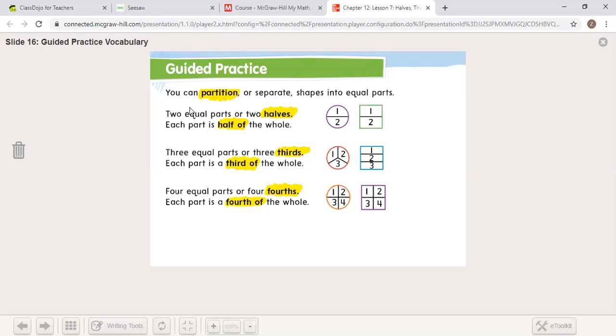Let's look at the guided practice. You can partition, and I want you to remember that word. Partition means to separate shapes into equal parts. Two equal parts or two halves. Each part is half of a whole. Here, think of your pizza. This side's for you, this side's for your little brother or sister. You each get half. Cake. You get a half, they get a half.